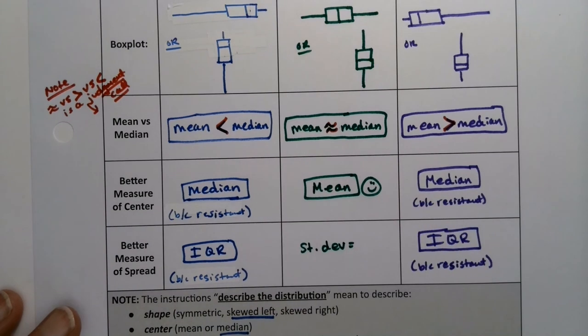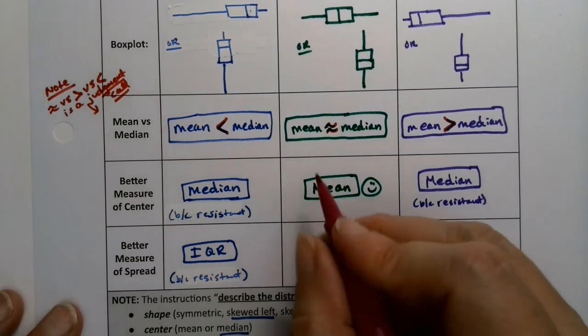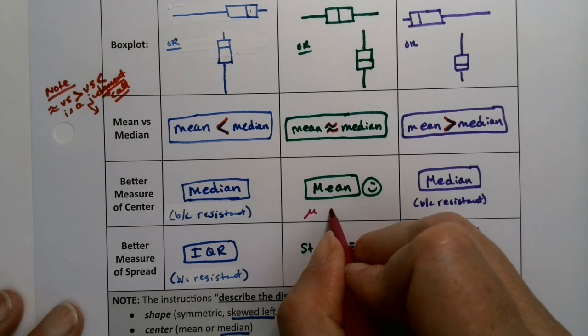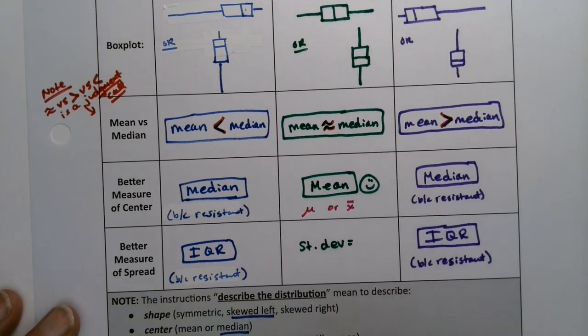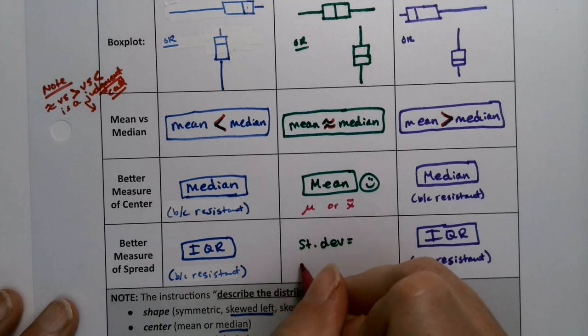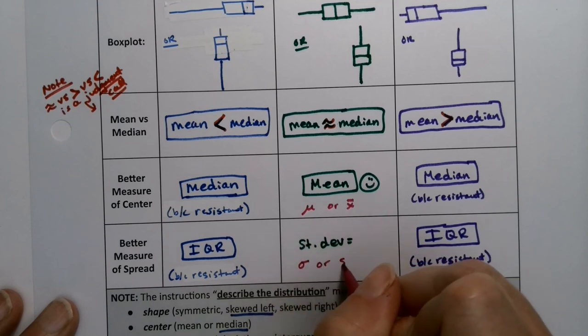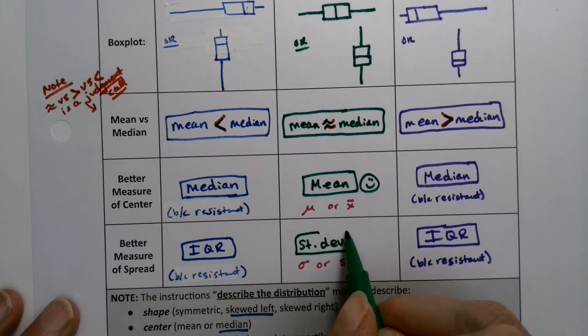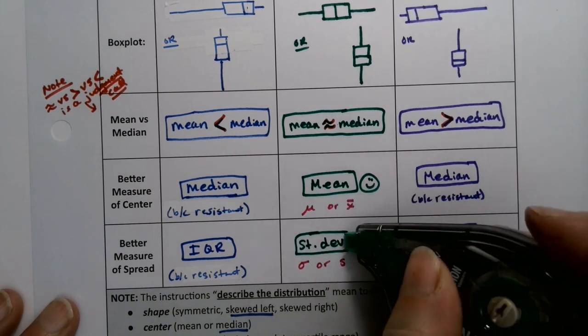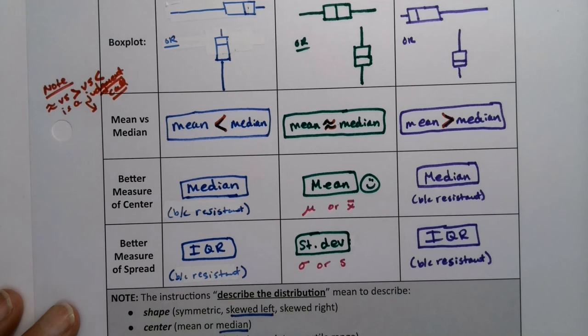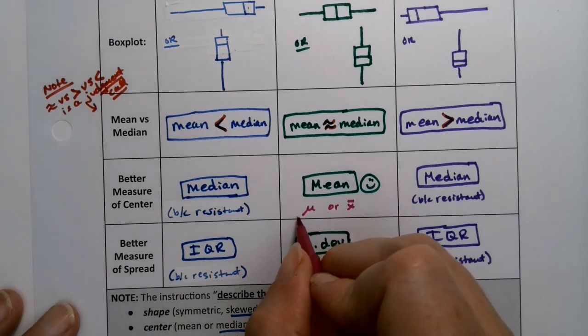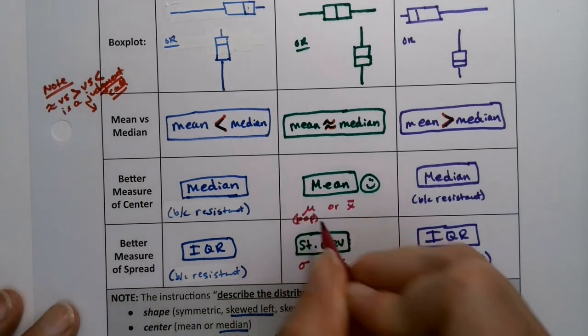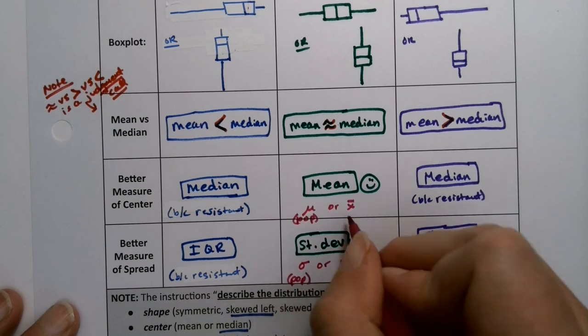Keep in mind, there's two means. There's mu or x bar. Mu goes with sigma, S goes with x bar. So there are two types. Mu and sigma are the population values. X bar and S are the sample ones.